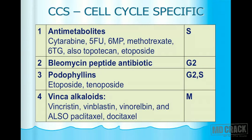The cell cycle specific drugs by phase: Anti-metabolites act on S phase — they deprive the cell of metabolites required for DNA synthesis. Examples: cytarabine, 5-fluorouracil, 6-mercaptopurine (6-MP), methotrexate, 6-thioguanine (6-TG), topotecan, and etoposide.